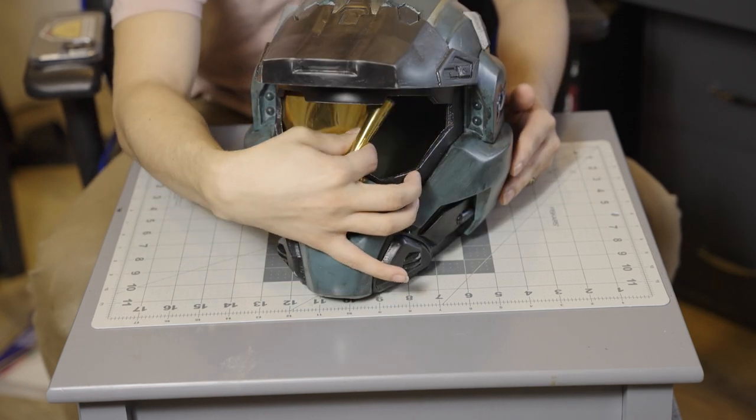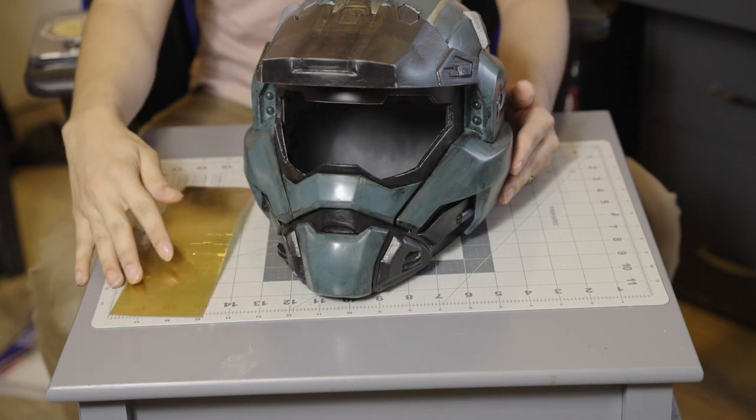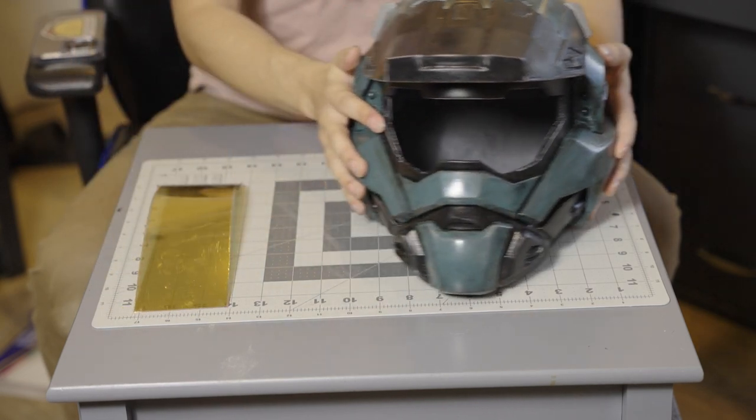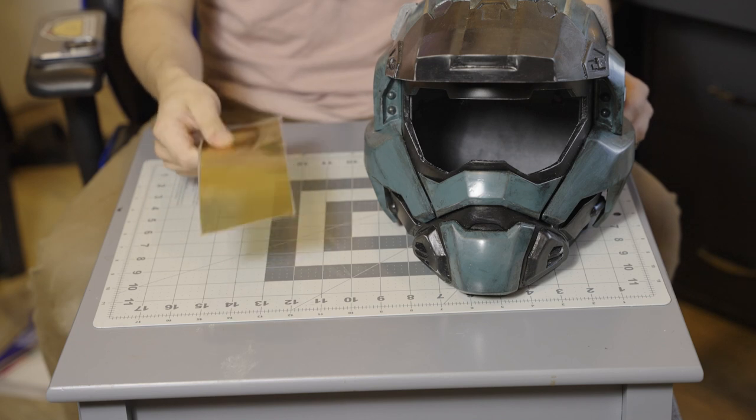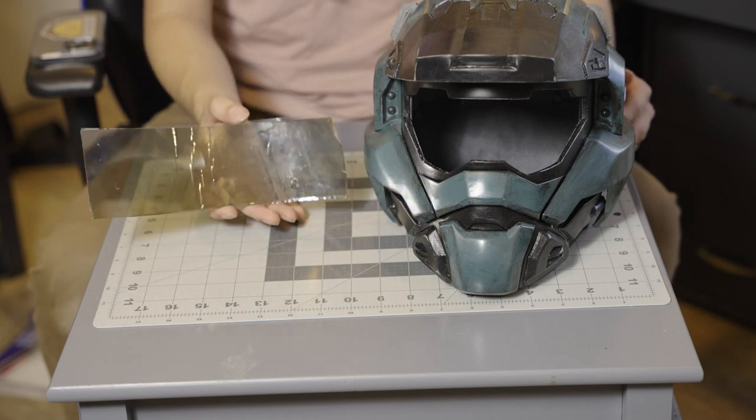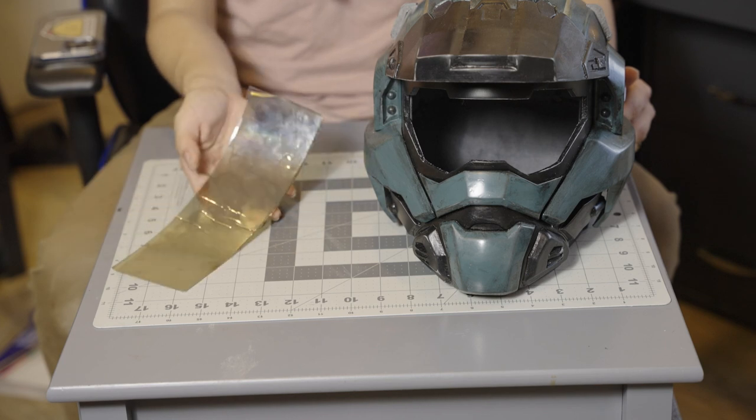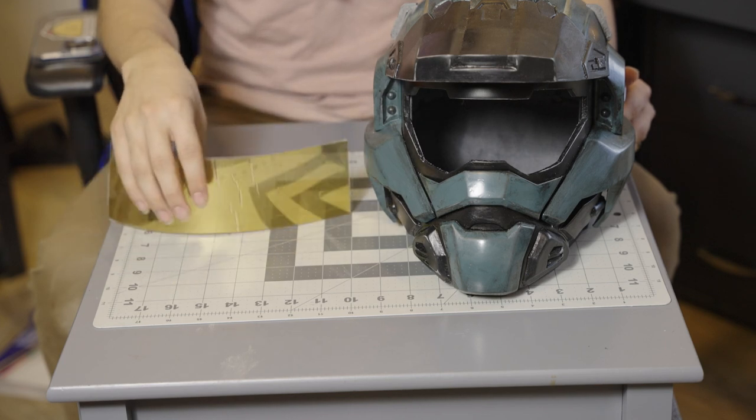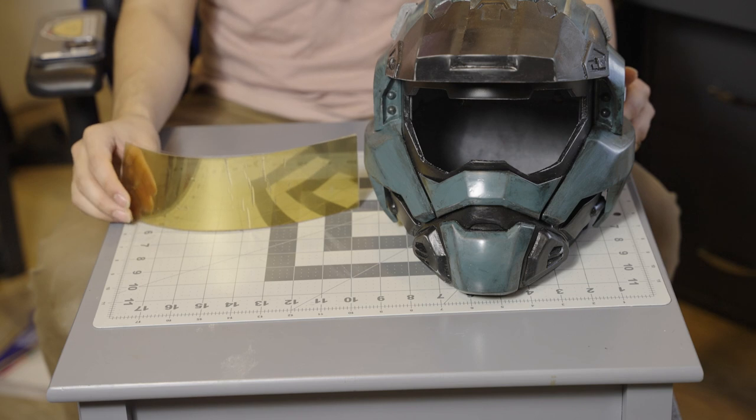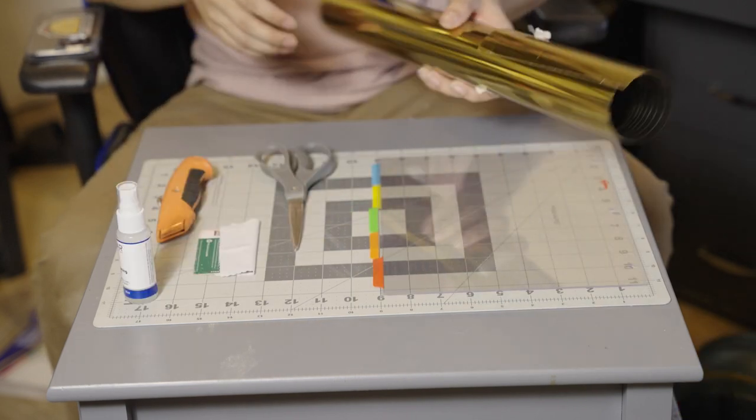The visor is actually a clear divider you'd find in a binder with a one-way reflective mirror that I bought on Amazon. All together with the material it only cost me no more than twenty dollars, and there was plenty more material for other visors or anything else I want to make a one-way mirror.